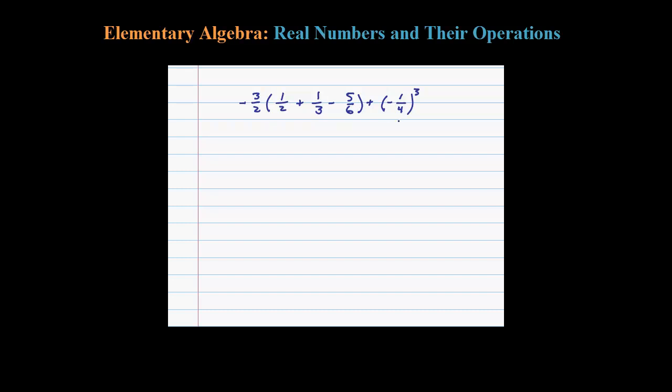Here we want to simplify using the order of operations, working the innermost parentheses first. We need to first find a common denominator to add fractions. To get the equivalent fractions, I'm going to multiply numerator and denominator here by 3 and numerator and denominator of this fraction by 2, because the LCD I could see is 6.